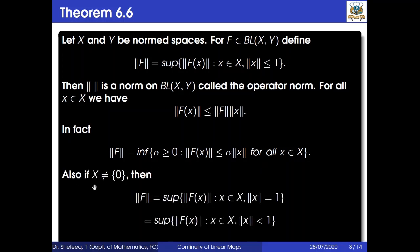In fact, ||f|| equals the infimum of all alpha greater than or equal to 0 such that ||f(x)|| ≤ alpha · ||x|| for all x in X. Also, if X is not equal to the singleton {0}, then ||f|| equals the supremum of ||f(x)|| for x in X with ||x|| = 1, which also equals the supremum of ||f(x)|| for x in X with ||x|| < 1. Now we want to prove the first part.